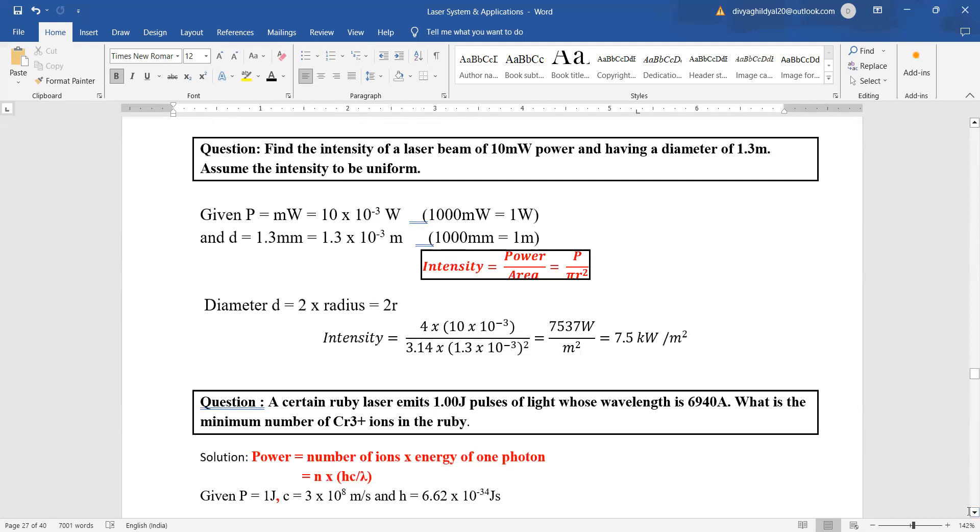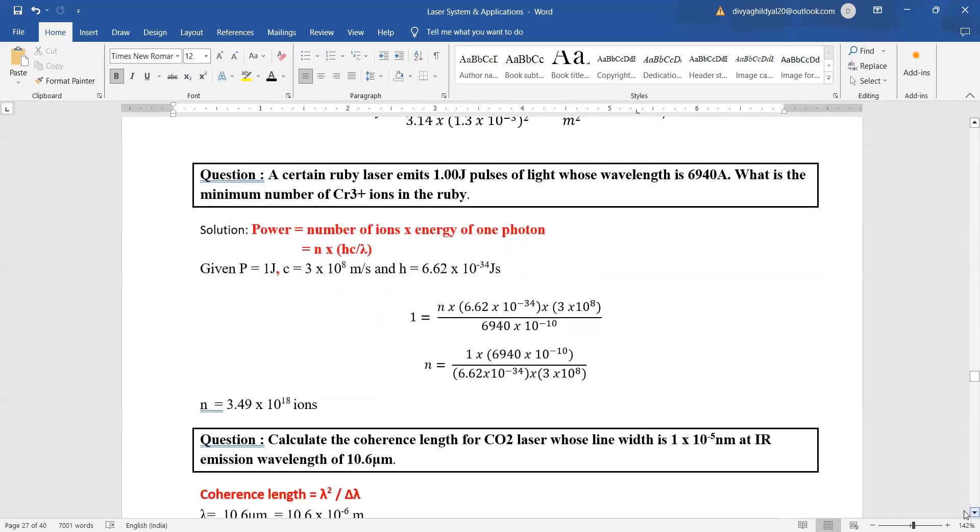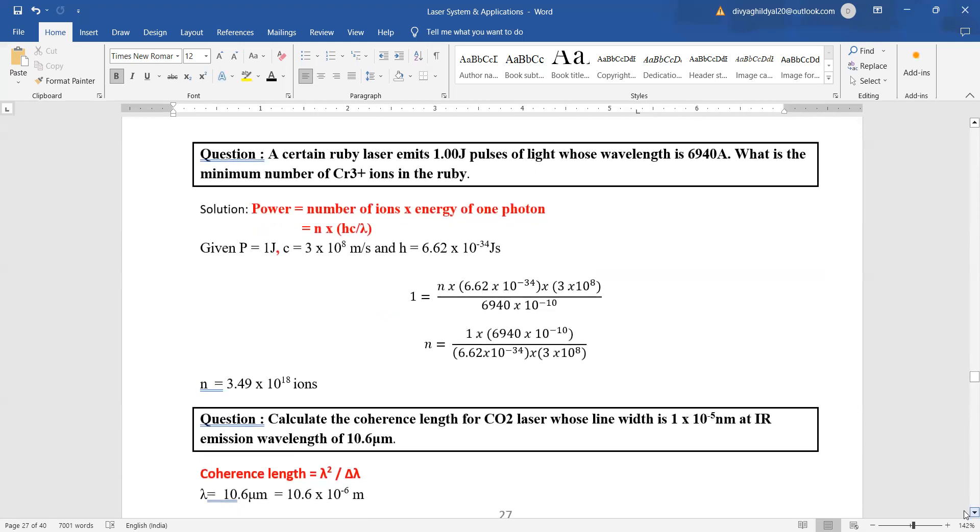A certain ruby laser emits 1 joule pulses of laser light whose wavelength is 6940 angstrom. Find the minimum number of chromium ions in the ruby. So power is equal to number of ions into energy of one photon. Power is 1 joule, c is this, and h is Planck's constant. We put the values and we are getting the answer.